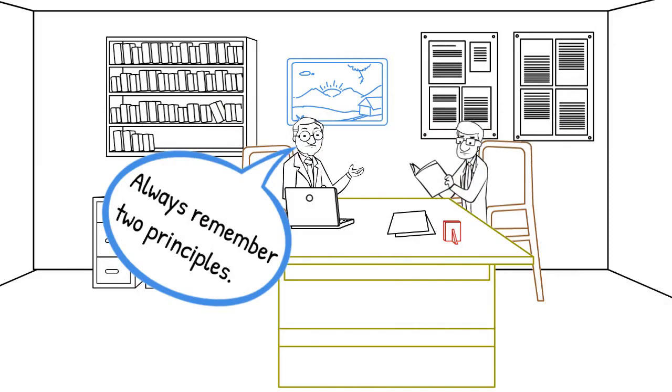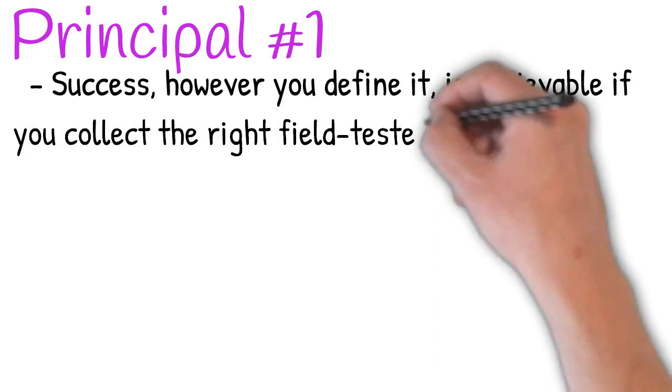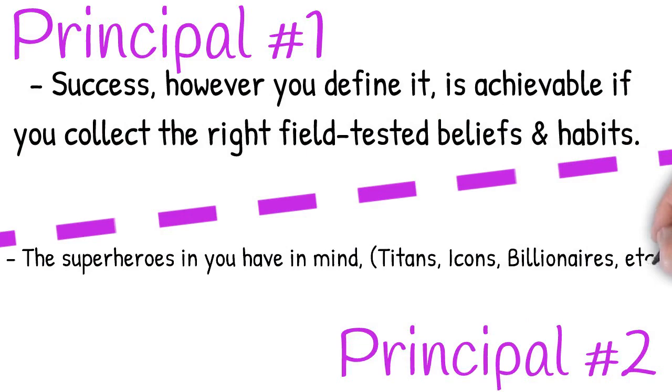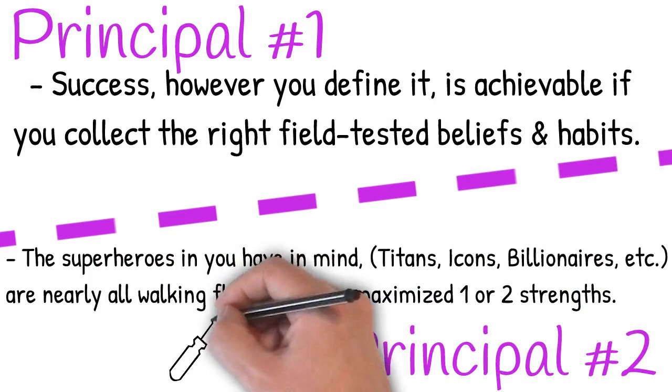The first principle is that success, however you define it, is achievable if you collect the right field-tested beliefs and habits. And the second principle, the superheroes you have in mind, the icons, the billionaires, the titans, the idols, they are all nearly walking flaws who have maximized one or two strengths.